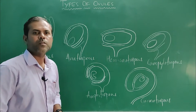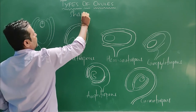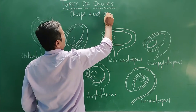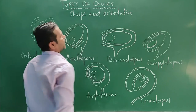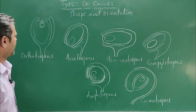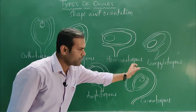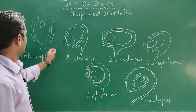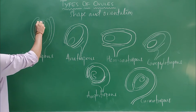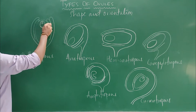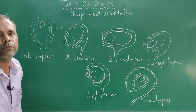Types of ovule — ovules are classified based on shape and orientation into six different types. Before going into the classification, let's understand the basic structure of the ovule. This part is called nucellus, a nutritive tissue.